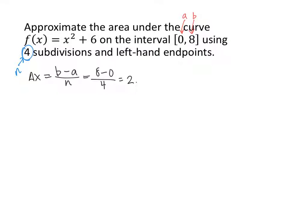That 2 represents the width of each rectangle, or the width of each subinterval we're dividing the interval from 0 to 8 into. The next step is to draw a number line starting at 0 and ending at 8. We're dividing this into 4 pieces, so we draw 3 tick marks in between, giving us 4 total rectangles. Going up by 2 each time, our marks are at 0, 2, 4, 6, and 8.